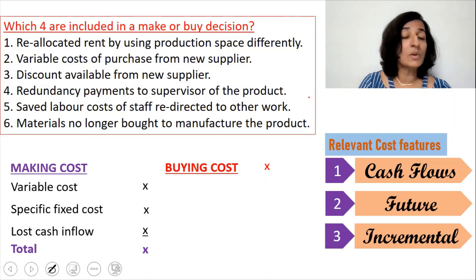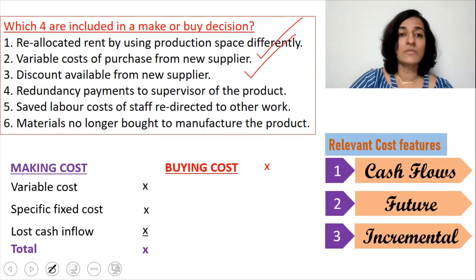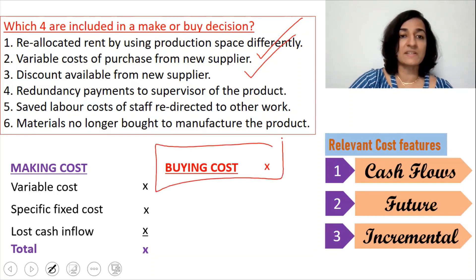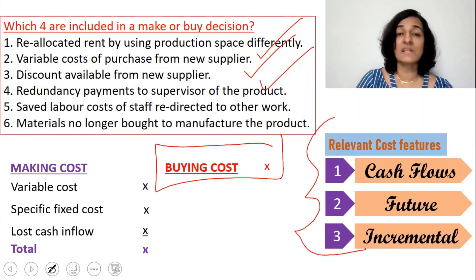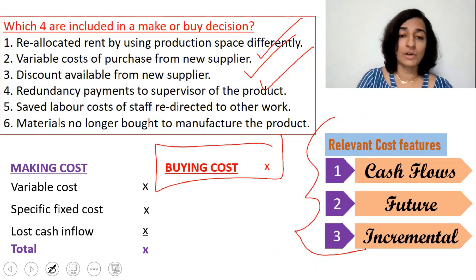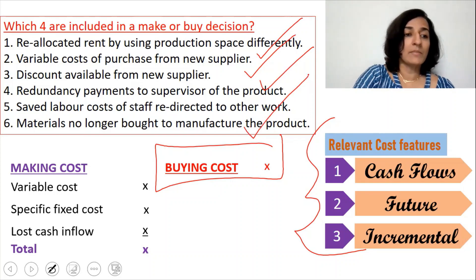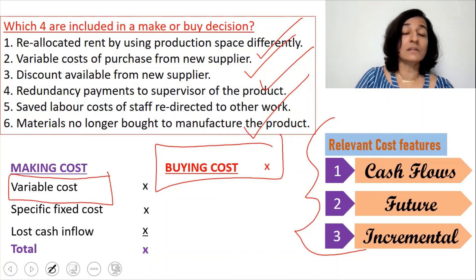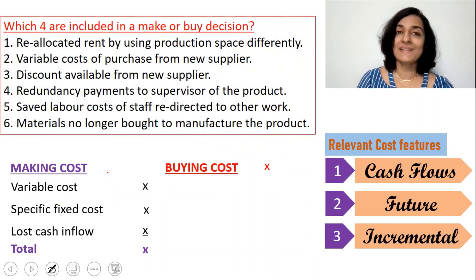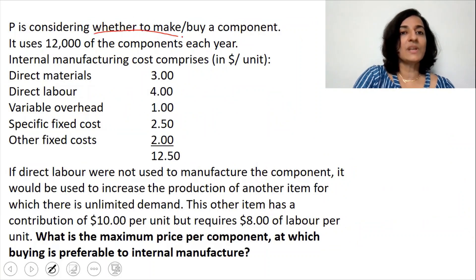So the four items included in a make or buy decision are: (1) variable cost of purchase from the new supplier, (2) discounts available from the new supplier — because they affect buying cost, (3) redundancy payments to the supervisor — because they satisfy all three relevant costing features and result from our decision to stop production, and (4) materials no longer bought to manufacture the product — because they fall under variable cost in the making cost list.